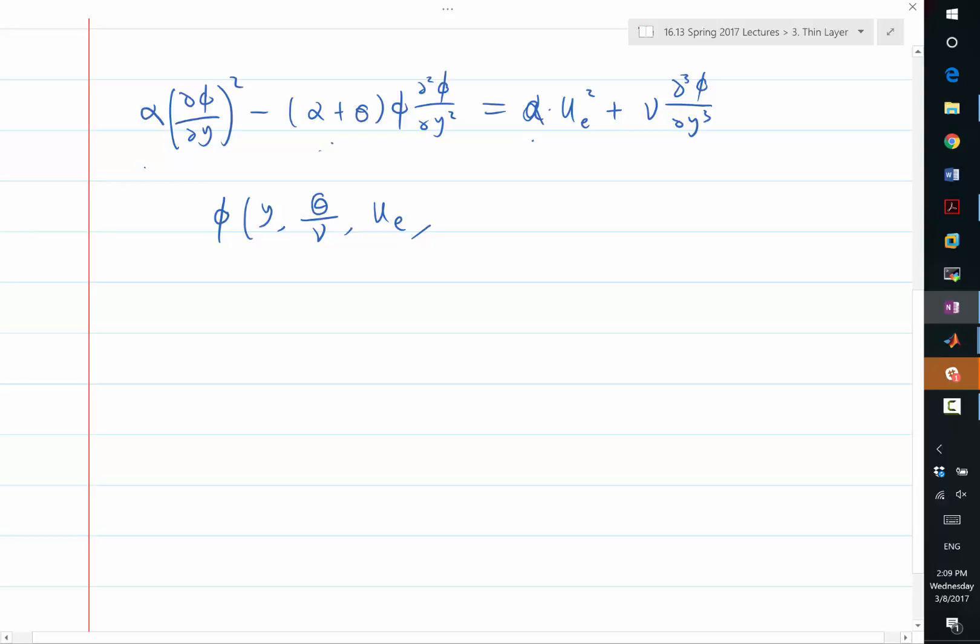Now, in this case, we have one more parameter. Alpha and theta are the same unit, right? Otherwise, you can't add them together. So the additional one is alpha over theta. So this is already non-dimensional.